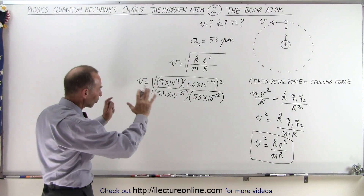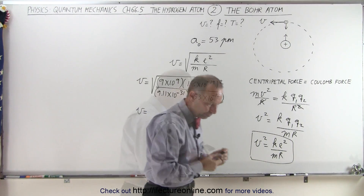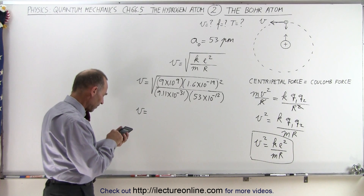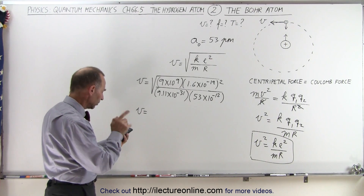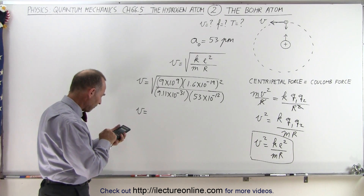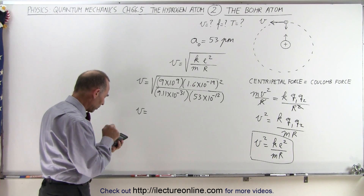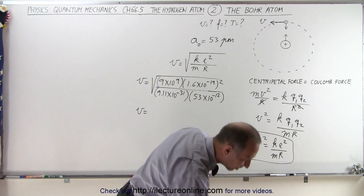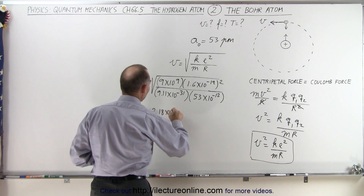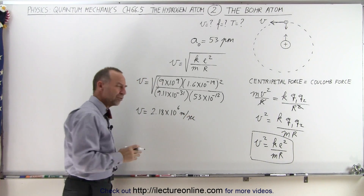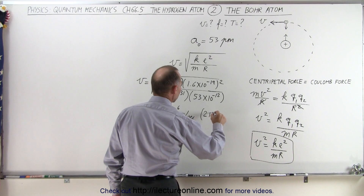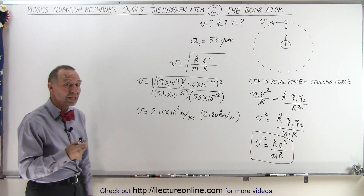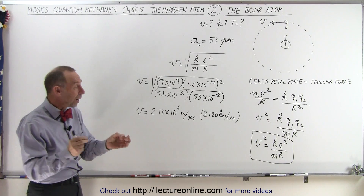I'm leaving the units off because that way it looks a lot cleaner. So the velocity is equal to the square root of 9e9 times (1.6e-19) squared, divided by 9.11e-31 times 53e-12. If we take the square root of that, we get 2.18 times 10 to the 6th — so that's 2.18 times 10 to the 6th meters per second. To put some relevance to that, that is equal to 2,180 kilometers per second. Imagine that — an electron goes around the nucleus of a hydrogen atom at a speed of more than 2,000 kilometers per second. That is quite some speed.